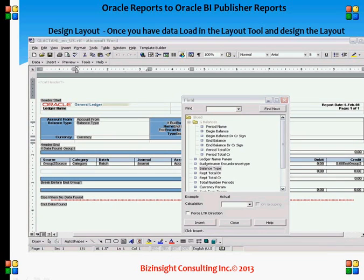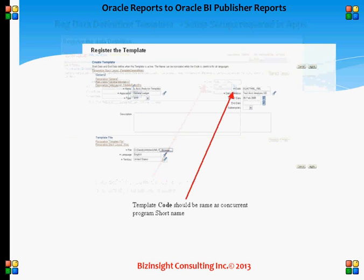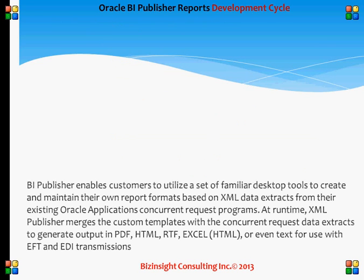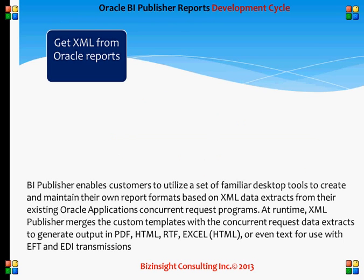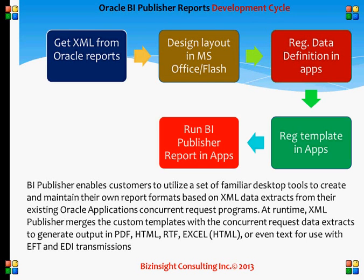Once the layout is designed, go to step three: registration of the data definition. You go to Oracle Application and register your data definition templates. Once the data definition is done, register your templates. Once that is complete, you are ready to run your existing concurrent program, and the output of the concurrent program will be an XML Publisher report. To summarize: get the XML from Oracle Report, design your layout, register the data definition, register the template definition, and you are ready.